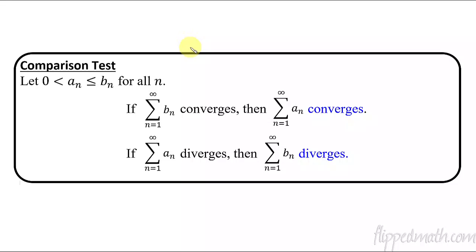So here's the first thing that you have to learn. If you have two different series, and we say that a_n is smaller than b_n for all n, then what happens is if b_n converges, then a_n also converges. Now this is kind of hard to just memorize, so let me show you just a little picture, and I think this will make a lot more sense.